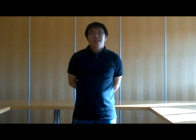Based on the literature, we believe Yao Ming should get surgery. Although no significant difference was found between conservative treatment and surgery overall, ORIF has been shown to increase navicular bone strength and therefore decrease the risk of future fractures. Since Yao Ming is an athlete who would like to compete in basketball for as long as possible, ORIF would be the best option for him.